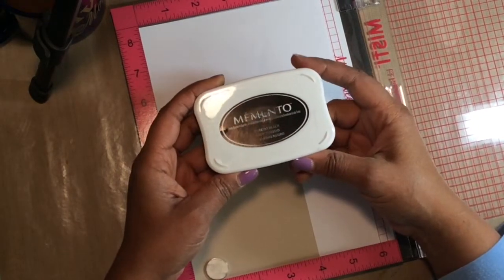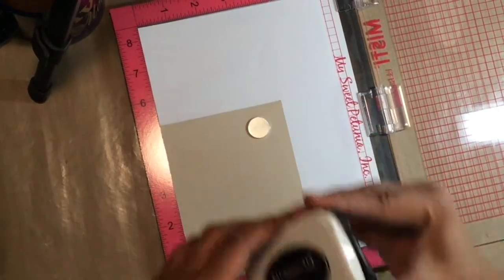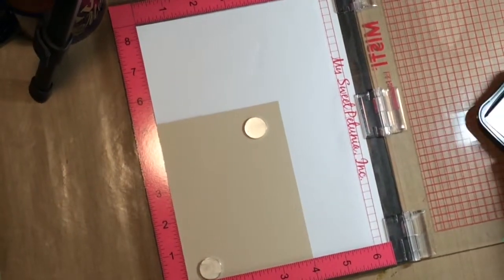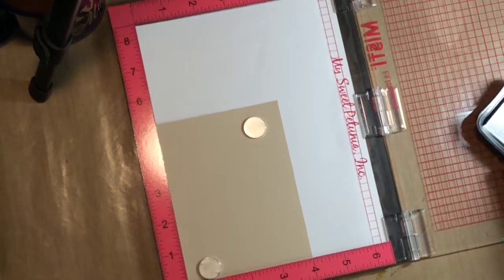I'm using Memento ink because I am going to be doing some Copic marker, just light Copic marker, not a lot of shading, not a lot of highlighting, just putting the color down on the egg.